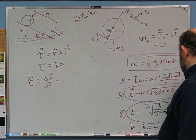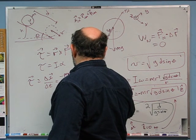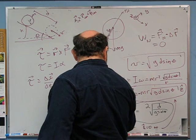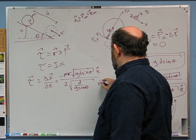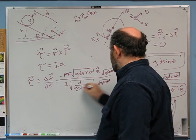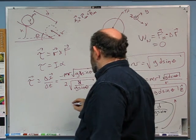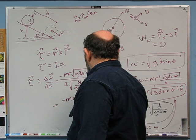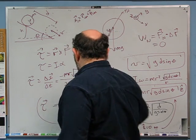Now simplify by multiplying top and bottom by the square root of g sin theta. The square roots of d on top and bottom cancel. g sin theta times g sin theta under square roots becomes just g sin theta. So I get: minus mr times g sin theta, all divided by 2, in the z-hat direction. That is the torque — that's our answer to part D.